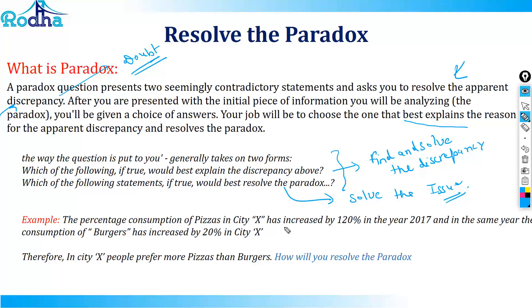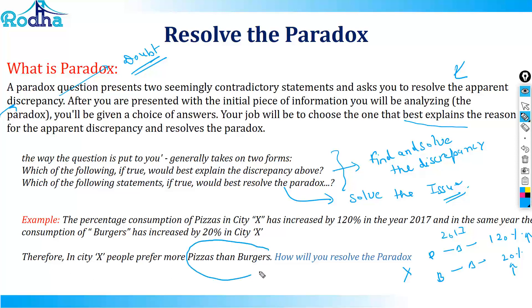Let's look at a typical paradox question. The percentage consumption of pizzas in city X has increased by 120% in 2017, and in the same year the consumption of burgers has increased by 20% in city X. Based on this, the author concludes that people in city X prefer more pizzas than burgers. At first glance, since 120 is bigger than 20, this seems to make sense. But we are talking about percentage changes, not absolute numbers — and without absolute values, percentage change cannot quantify the absolute increase.